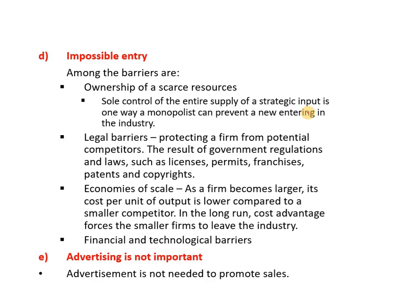Another characteristic is impossible entry. Barriers include ownership of scarce resources, legal barriers, economies of scale, and financial and technological barriers. For ownership of scarce resources, the input used to produce that product is owned by the monopoly firm, so other firms cannot access that resource. Legal barriers include protection by law — licenses, permits, and franchises — where the government issues only one permit to one firm.